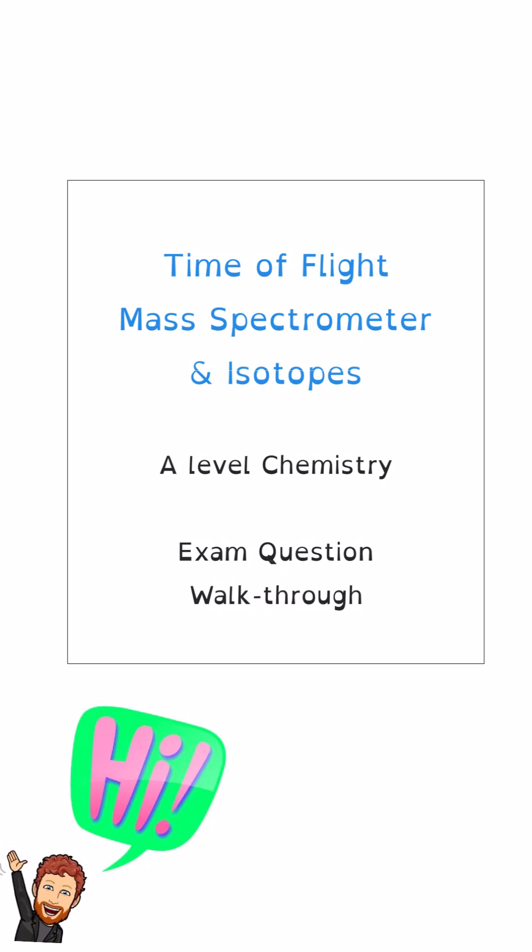Hello everybody and welcome to another A-level chemistry exam question walkthrough. This time we're going to take a look at the time-of-flight mass spectrometer and isotopes. This is a really important question - it always comes up on paper one for chemistry and they always ask you a little bit about isotopes which you find out about using a mass spectrometer, and then they follow it up with a calculation to do with probably isotopes and the mass spectrometer itself.